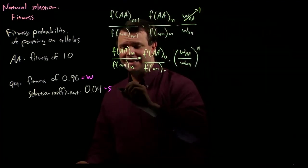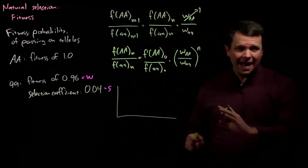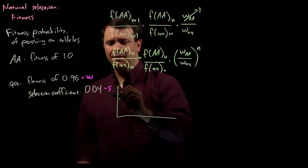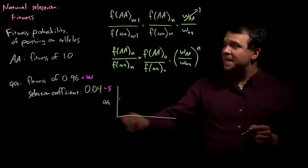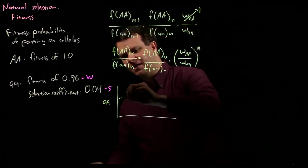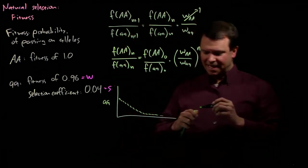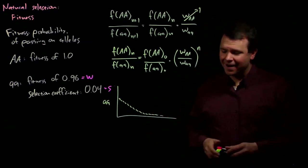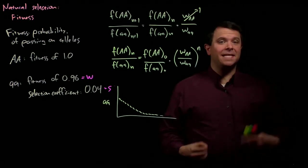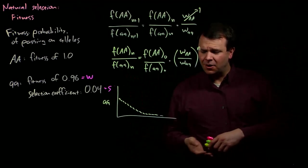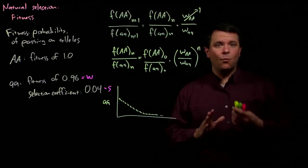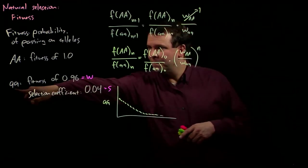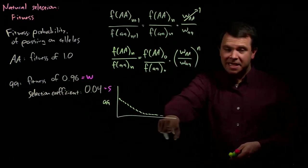When you look at this graphically, what you see is that no matter where on this plot things start, the frequency of the little a little a genotype, because it is less fit than the big A big A genotype, always decreases and approaches zero asymptotically. And so that raises the question, why are there, why are rare seriously deleterious alleles, like for example, the ones that cause autosomal recessive diseases like cystic fibrosis, why are those rare alleles still around, if this plot shows that the frequency of the homozygous recessive genotype decreases down to zero?